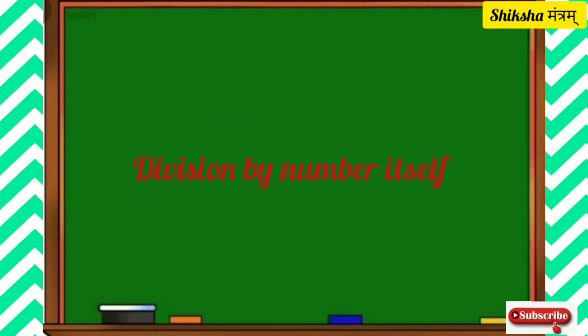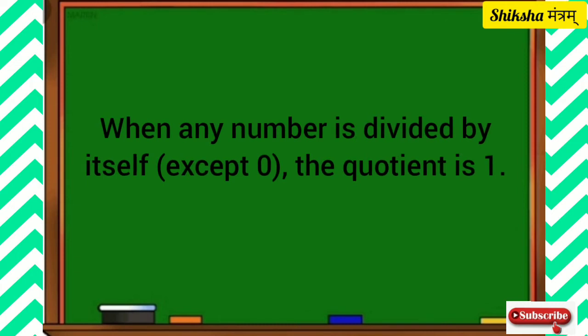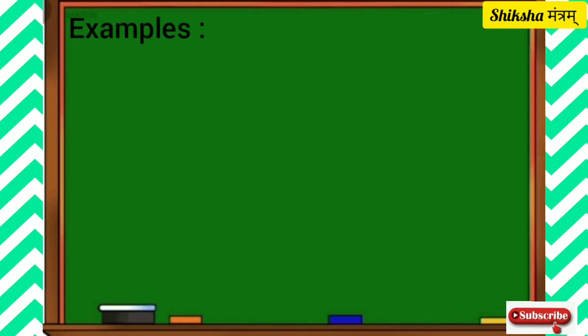Next property: division by the number itself. When any number is divided by itself, except 0, the quotient is 1. Let's understand this property by some examples.